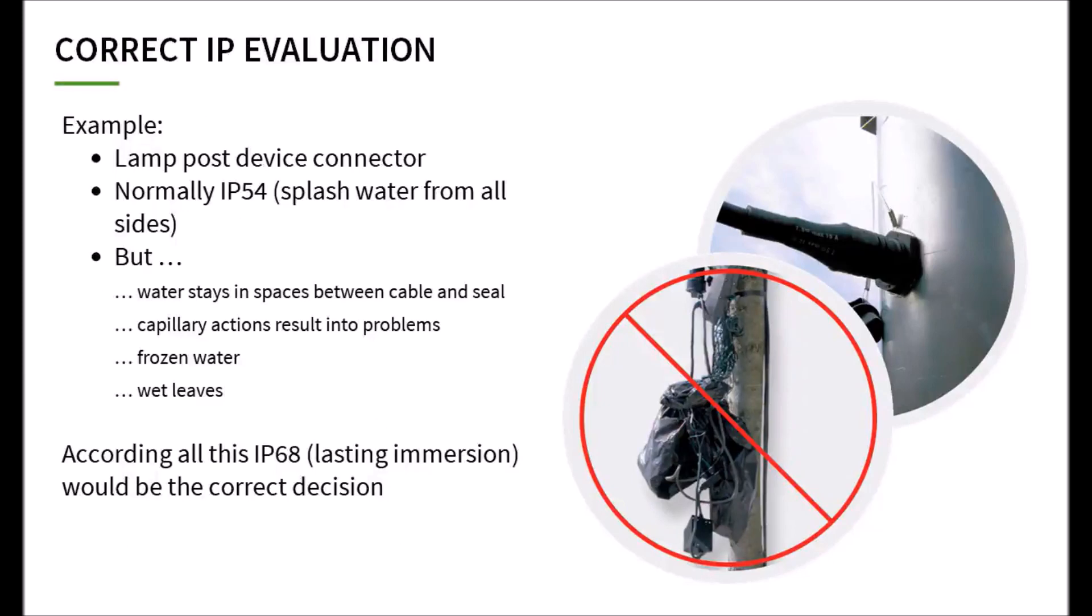It is always important to correctly assess the required IP protection class. Let us assume that a connector is to be inserted into a luminaire in the open air for power supply. By definition, the choice is IP54 protection. This means splashing water from all sides. However, a closer look at the sealing area reveals that it is sometimes completely covered with water for weeks.